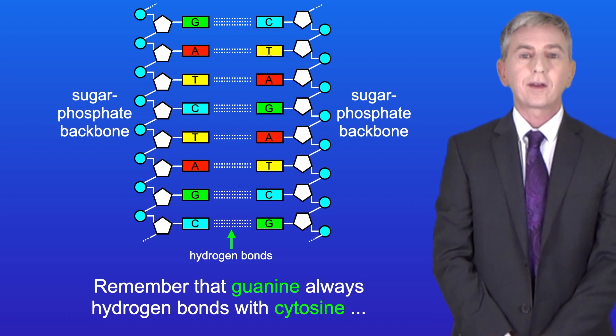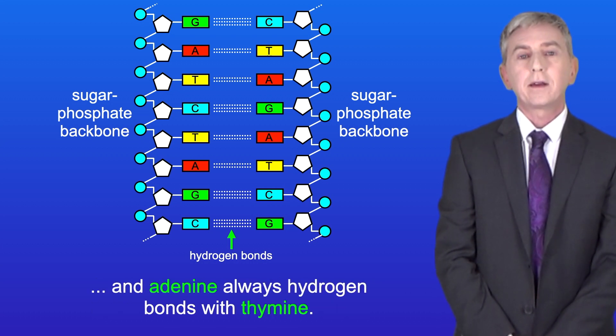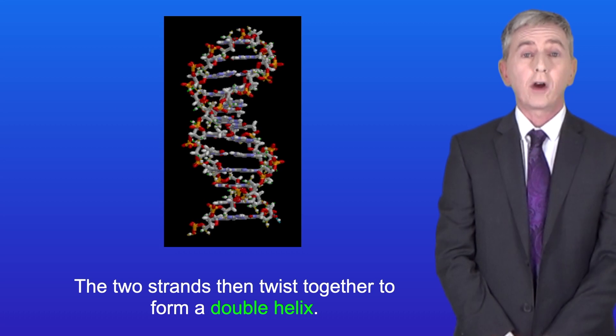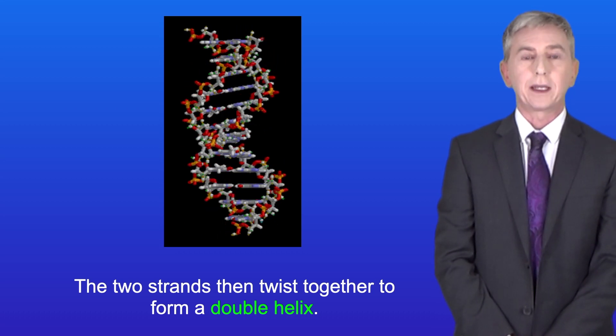The two strands are held together by hydrogen bonds which act between the bases on each of the strands. Remember that guanine always hydrogen bonds with cytosine and adenine always hydrogen bonds with thymine. Scientists call this complementary base pairing. The two strands then twist together to form a double helix.